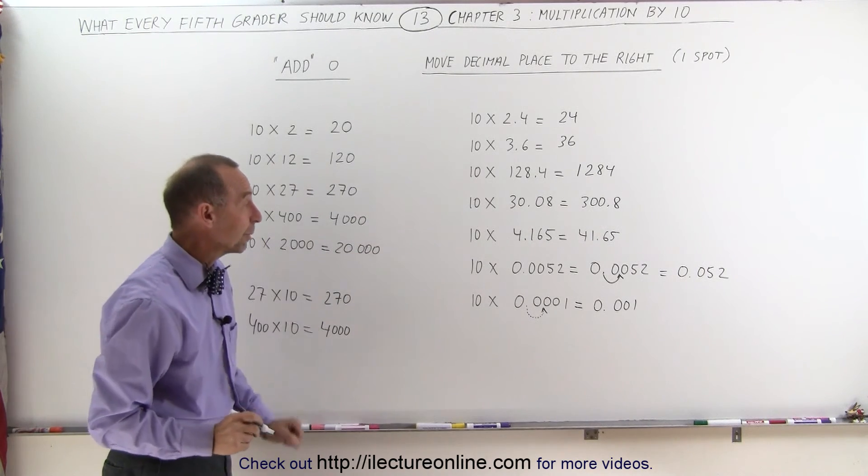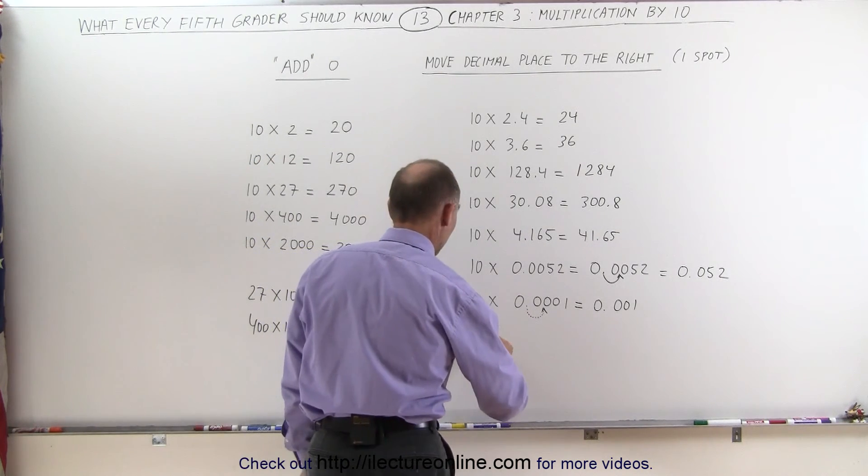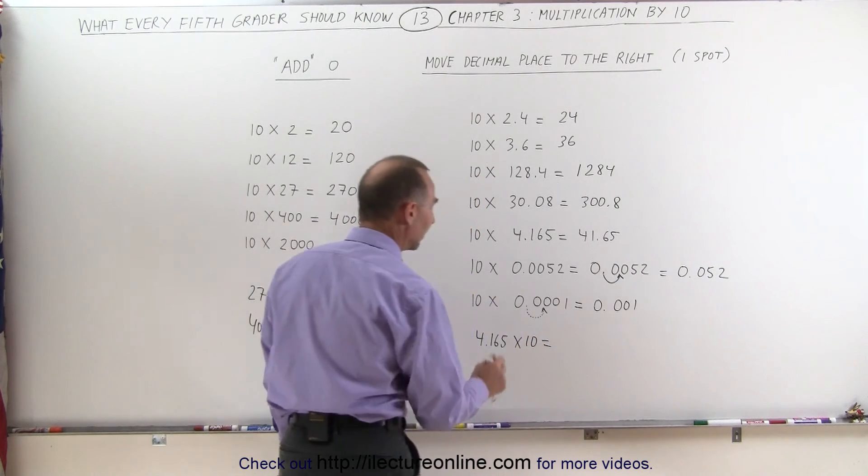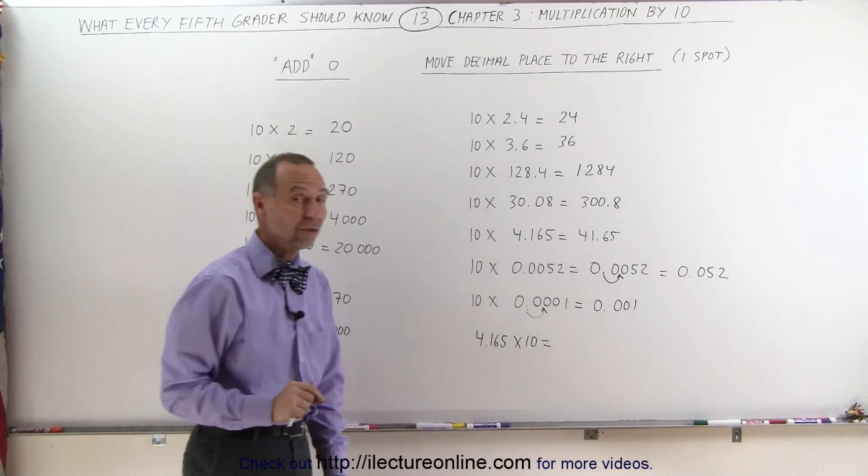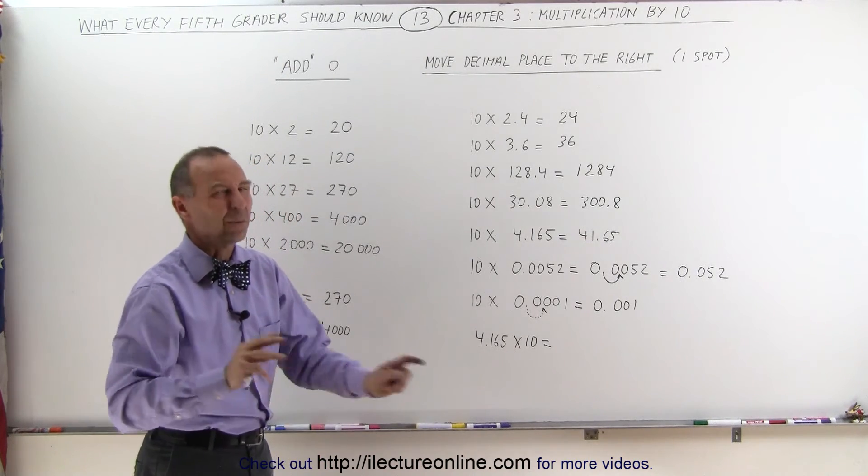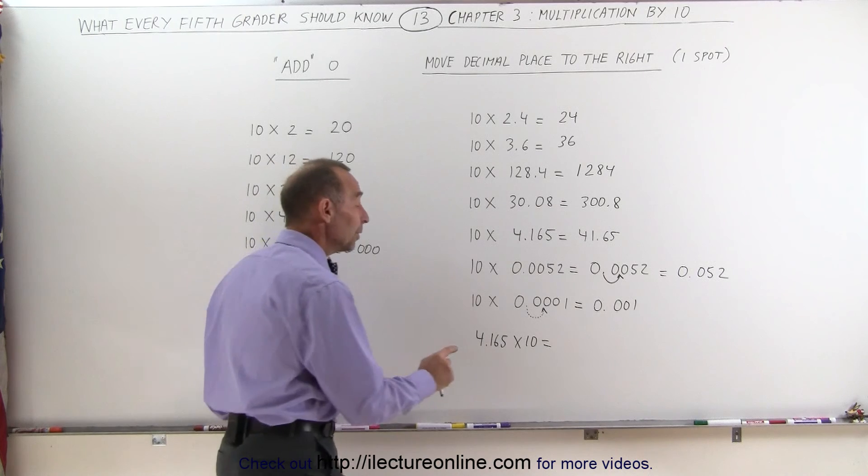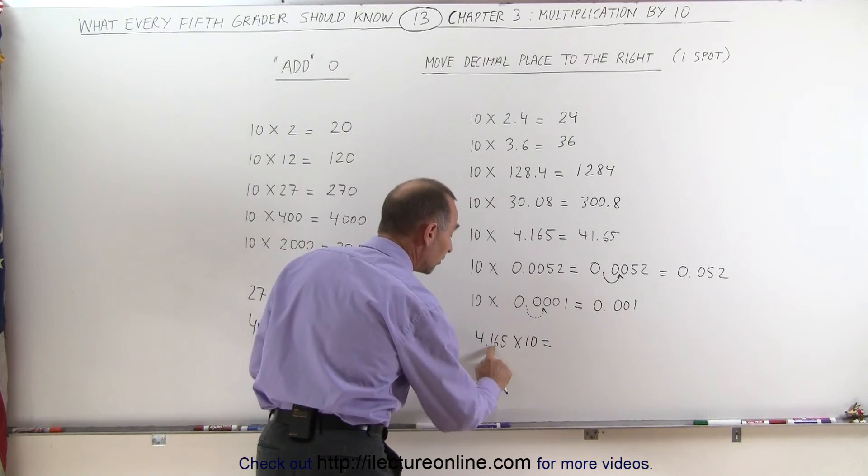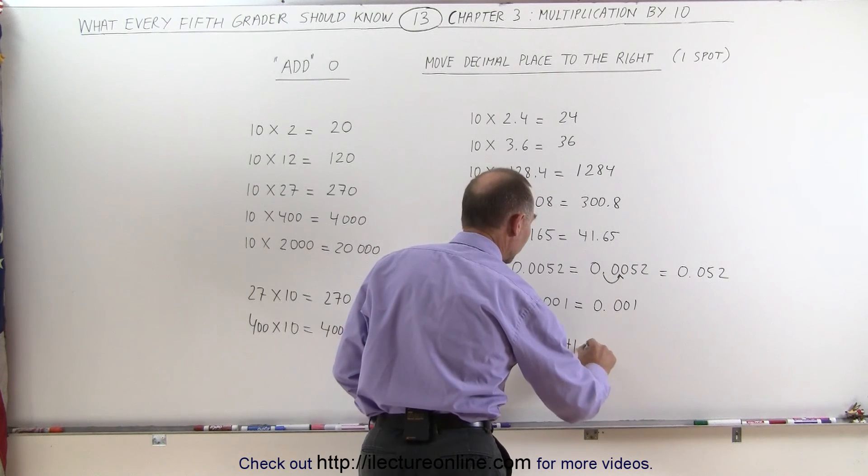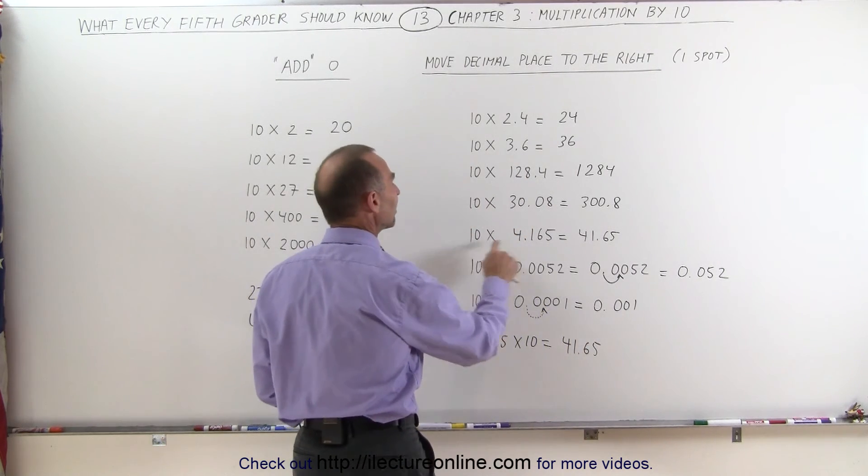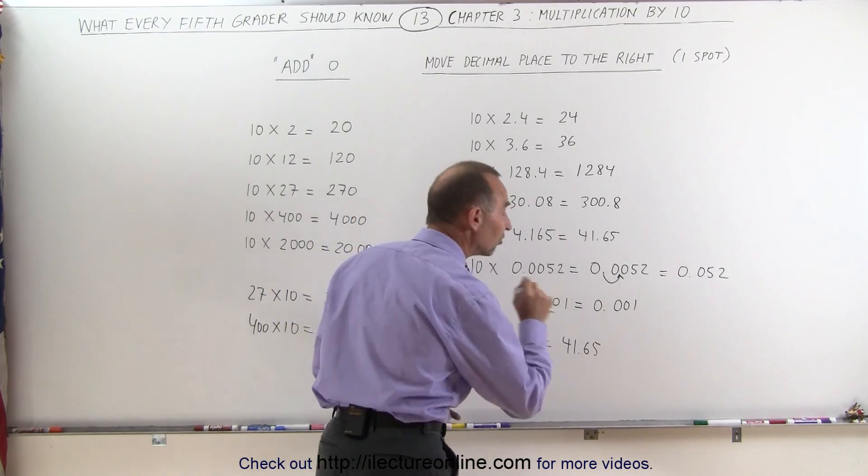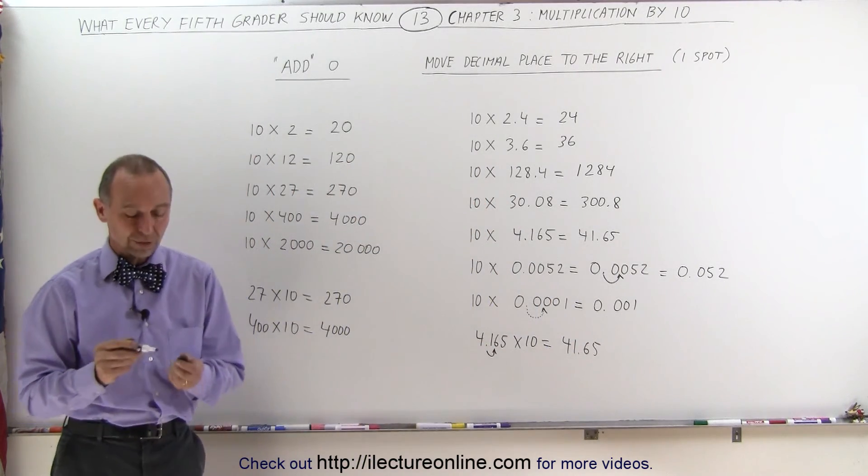Also, when we're dealing with decimal places like this, if we have the number 4.165 times 10, again, it doesn't matter which number comes first. With multiplication, they call that the commutative property. Not that we need to know that yet, but what we do here is simply move the decimal place over one spot like this, and this then becomes 41.65. So it doesn't matter if you write 10 times 4.165, or 4.165 times 10, you simply move the decimal place over one spot.